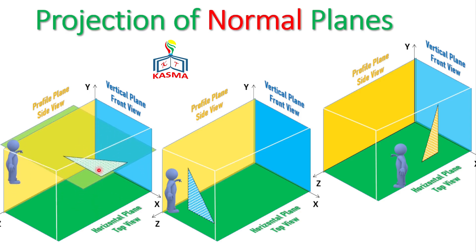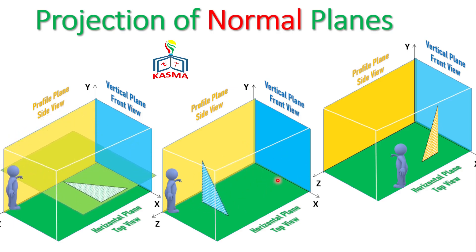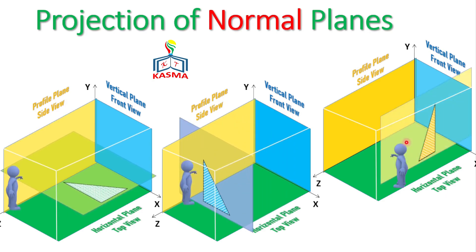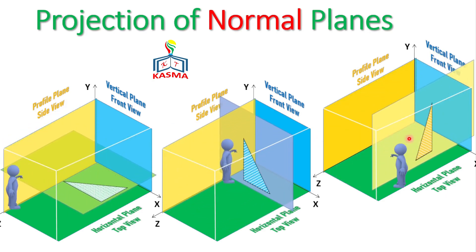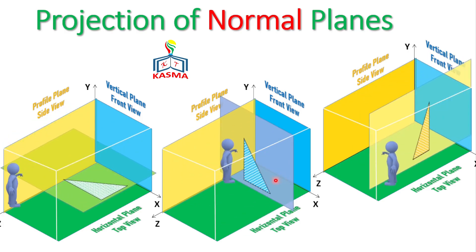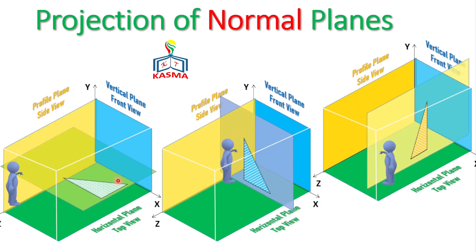Looking at the first case, this plane is normally parallel to the horizontal plane and perpendicular to the vertical and profile planes. Such types of planes are called normal planes. The plane might also be parallel to the vertical plane — perpendicular to the horizontal and profile planes. In the third case, the plane will be parallel to the profile plane and perpendicular to the horizontal and vertical planes. All those planes are normal planes by definition.